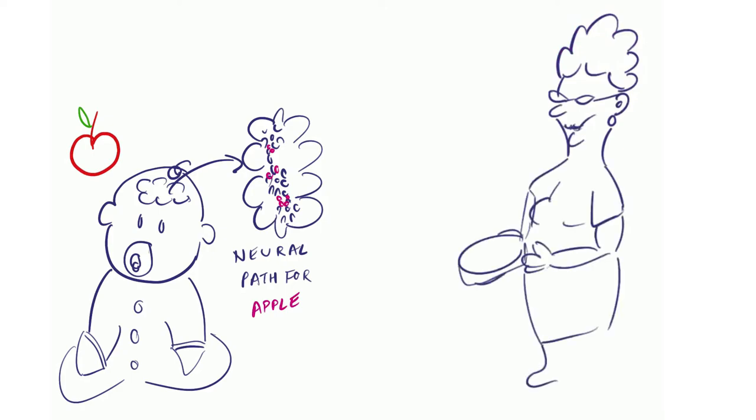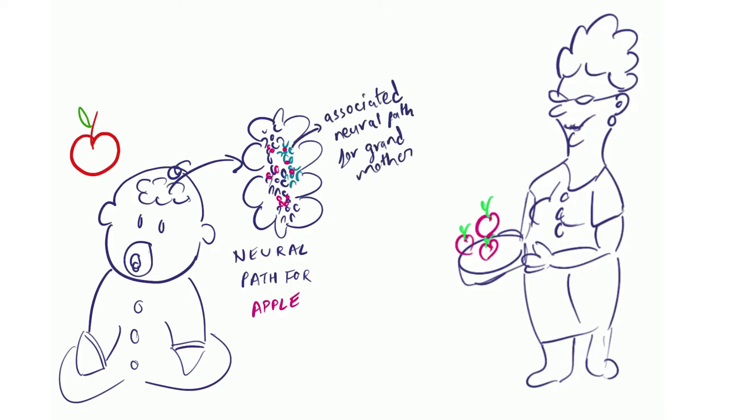Now imagine that in your childhood, whenever you went to your grandmother's house, your grandma gave you an apple. In your brain, there is one neural pathway for apple, but connected with this is another neural pathway for your grandmother. Whenever you see an apple, not only the neural pathway for apple starts firing, the connected neural pathway for your grandmother also becomes a little active.